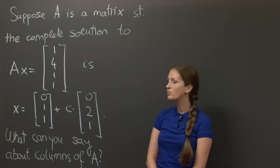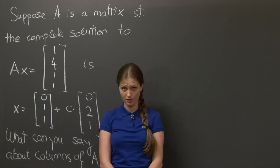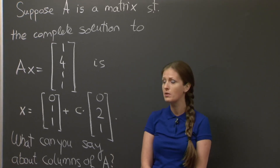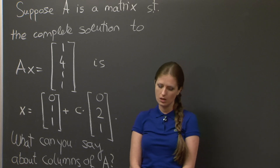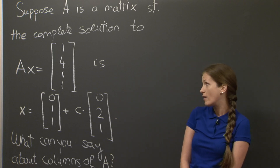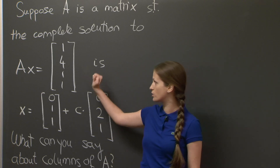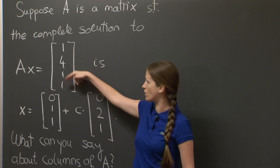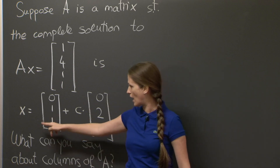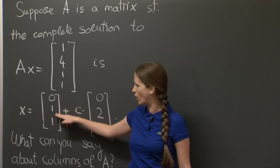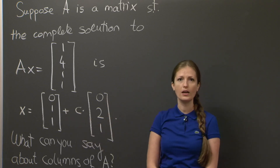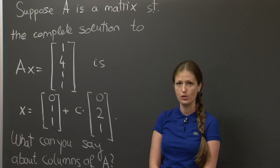Welcome. Today's problem actually appeared in a quiz — quiz one in fall of 1999 as question four. The problem puts the usual 'solve the following system' upside down by saying: we have some matrix, and we know that all the solutions to Ax equals the vector 1, 4, 1, 1 are given by x equals (0, 1, 1) plus any number c times (0, 2, 1). We're asked to say everything that we can about the columns of the matrix A.